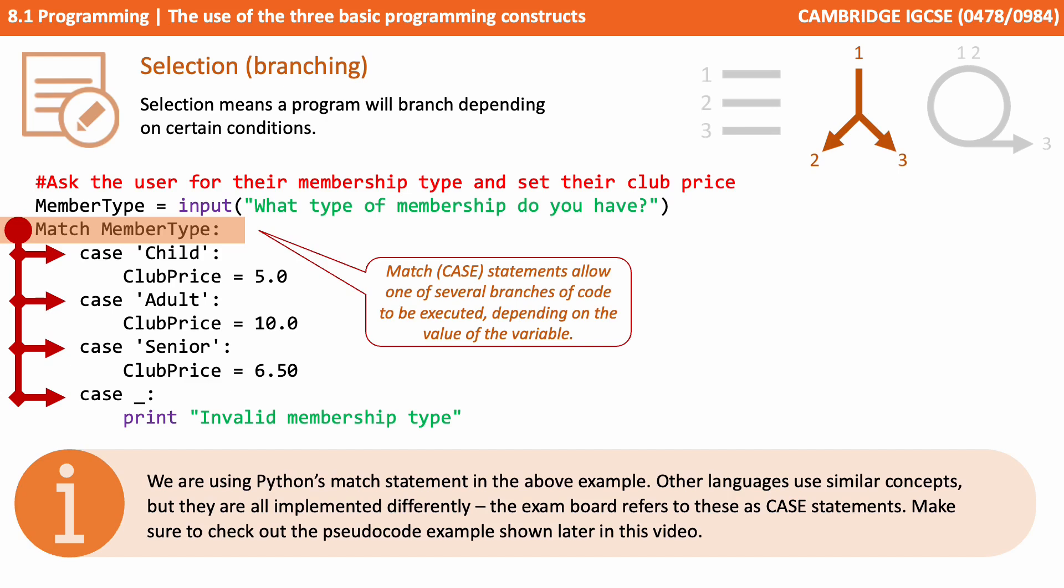If they type 'adult' it sets it to 10. If they type 'senior' it sets it to 6.5. There's also what's known as a wildcard or otherwise case. If none of the above case statements match, it will always default to the bottom option there, the one being used with the underscore. Now it must be noted that we're using Python's match statement in the above example. Other languages have very similar concepts but they're all implemented differently. The exam board refers to these as case statements. Make sure to check out the pseudocode examples shown later in this video so you know what they'll look like in the exam.